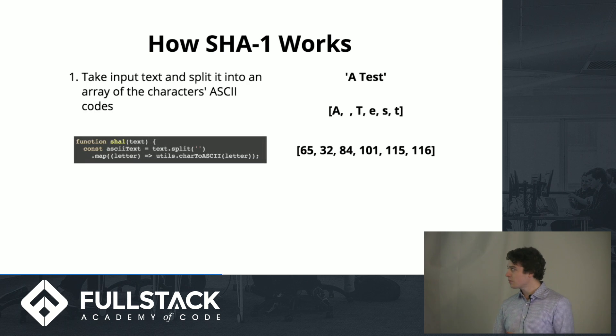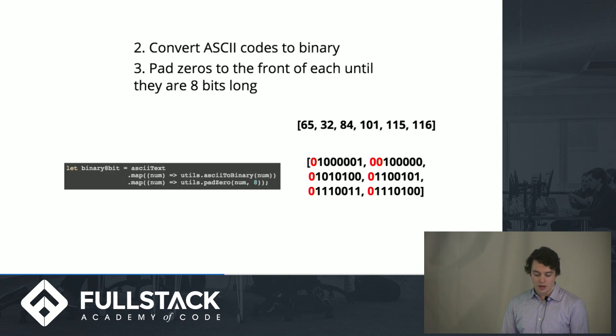So first, we're going to take our input text, split it into an array of all these characters, and then turn those characters into their ASCII codes, something we've all done before. Then we're going to convert these ASCII codes into binary and then just pad 0s at the front of each of these until they're 8 bits long. I have all these utility functions in my code here that I tried to name in a logical way so you can tell what's going on.